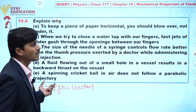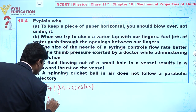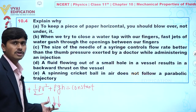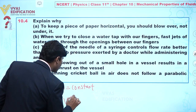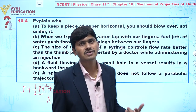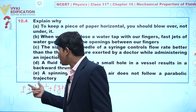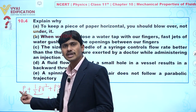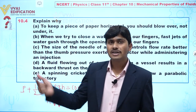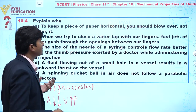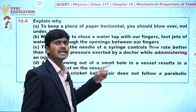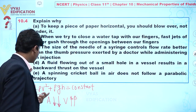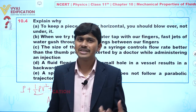For a needle, the area through which liquid comes out is very small, so velocity will be more. Since velocity appears as v² in the energy term, this factor is large. But if the doctor uses thumb pressure, only the first power of pressure contributes to energy. The v² term dominates, meaning the needle's small area controls the flow rate more effectively than thumb pressure.